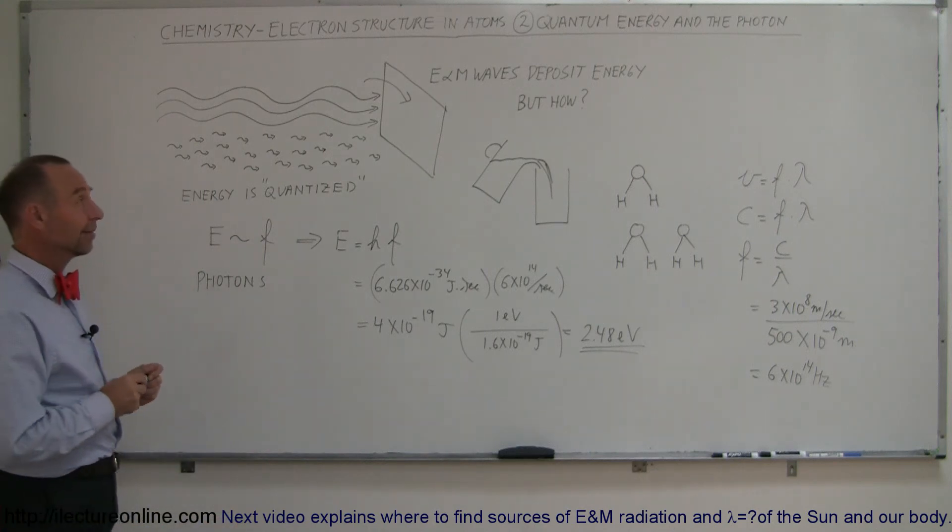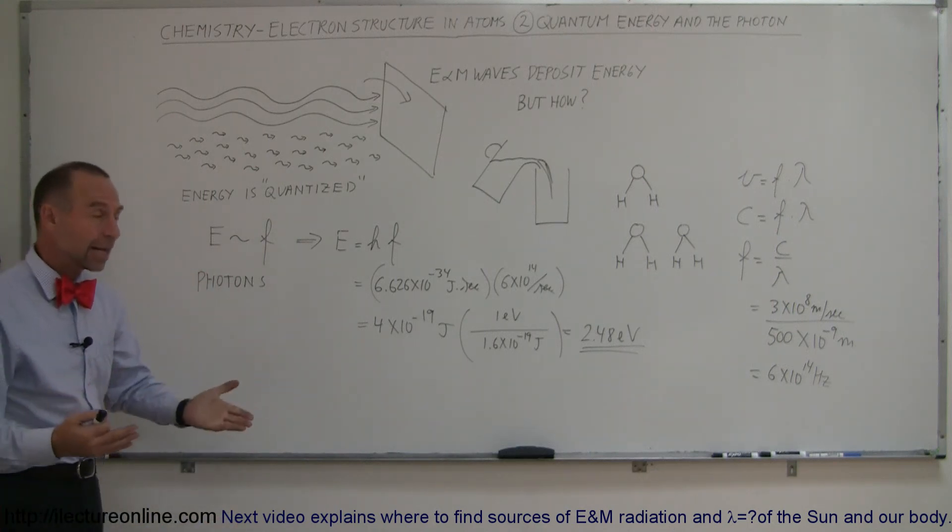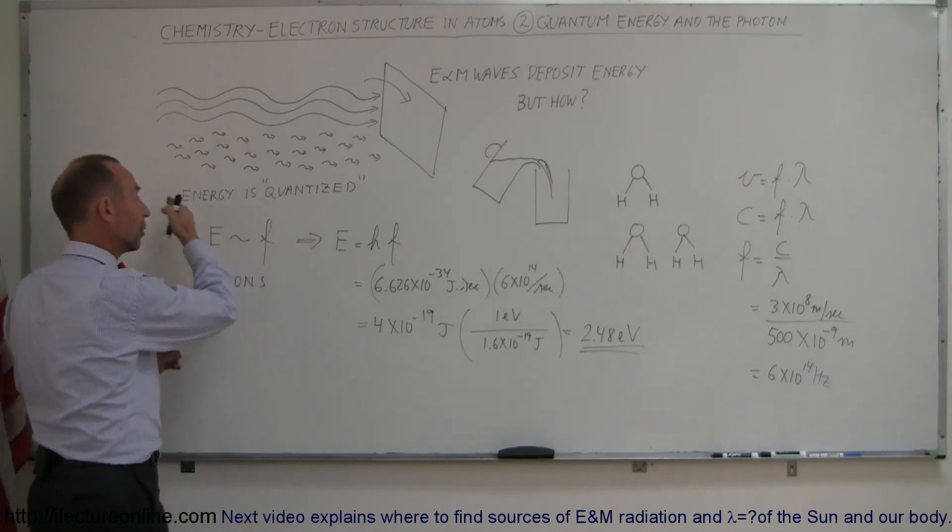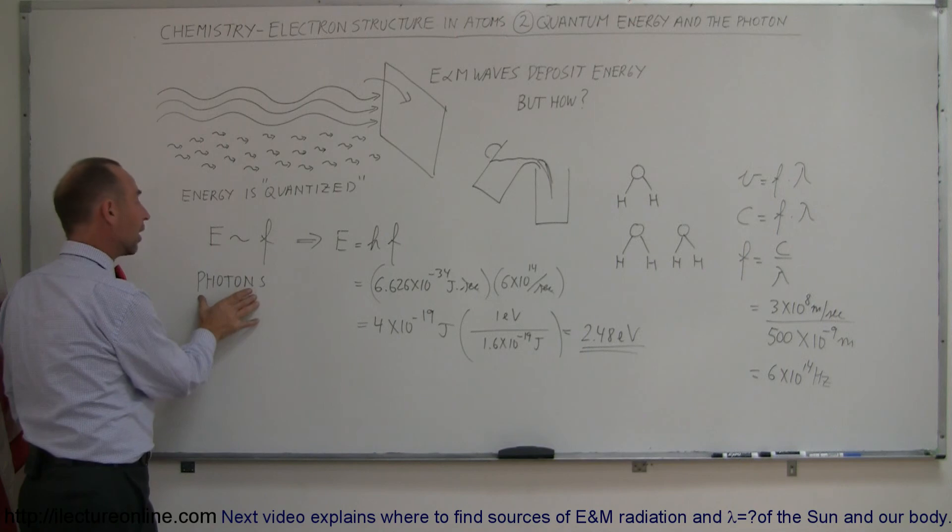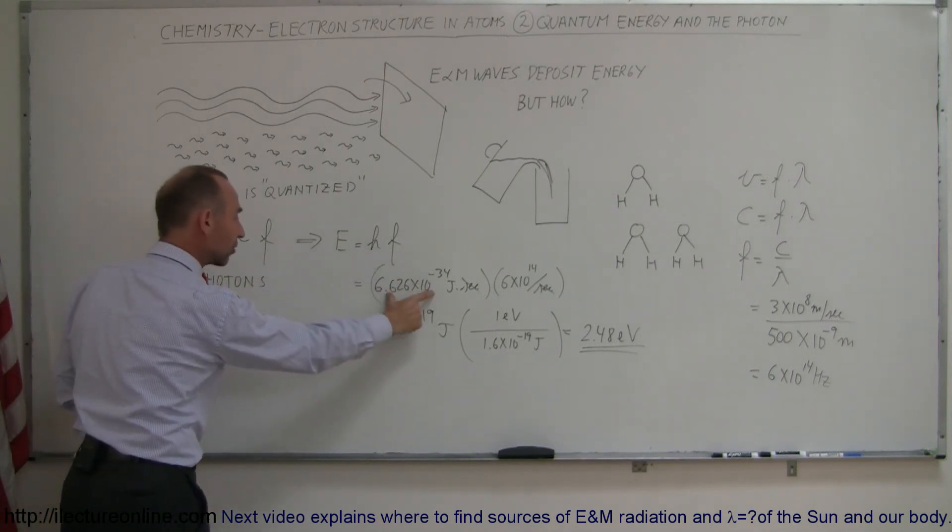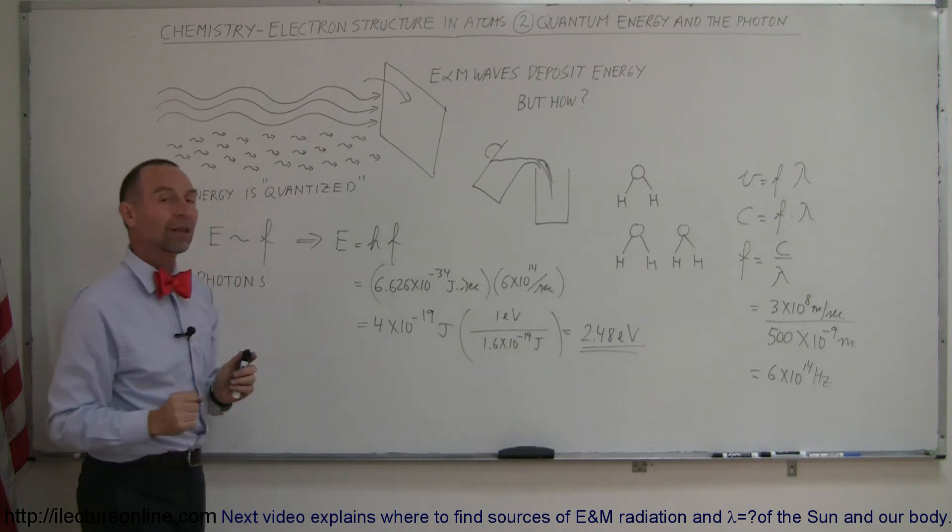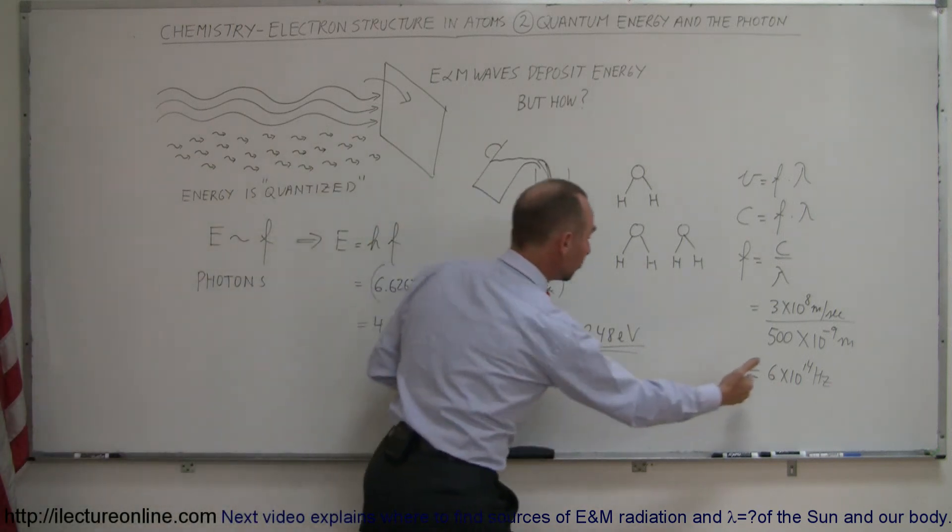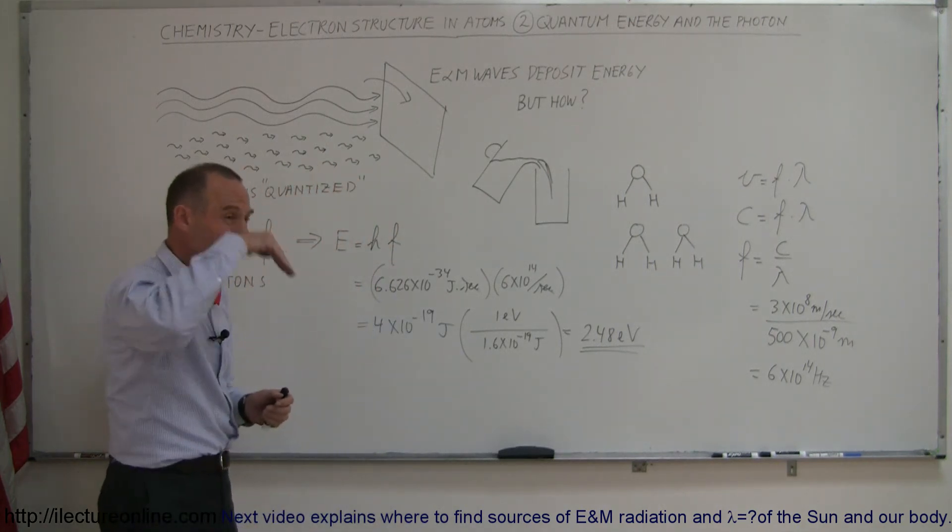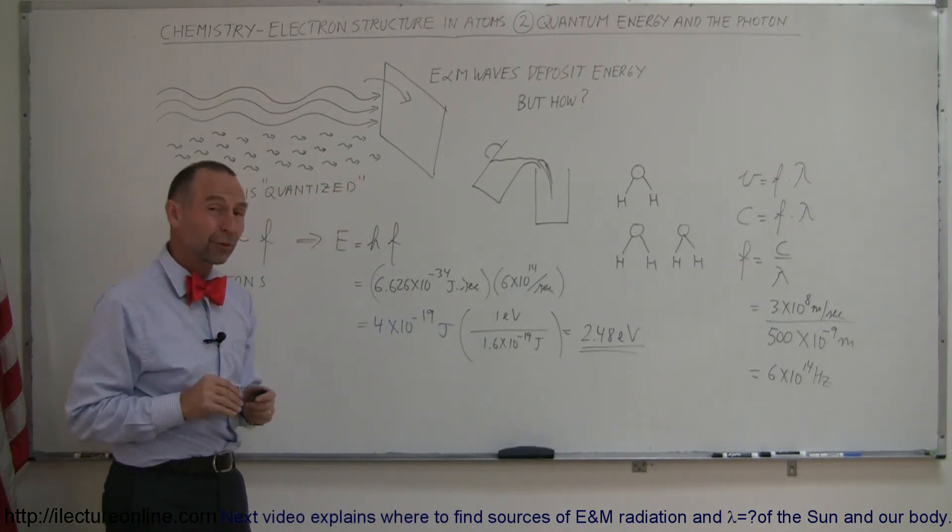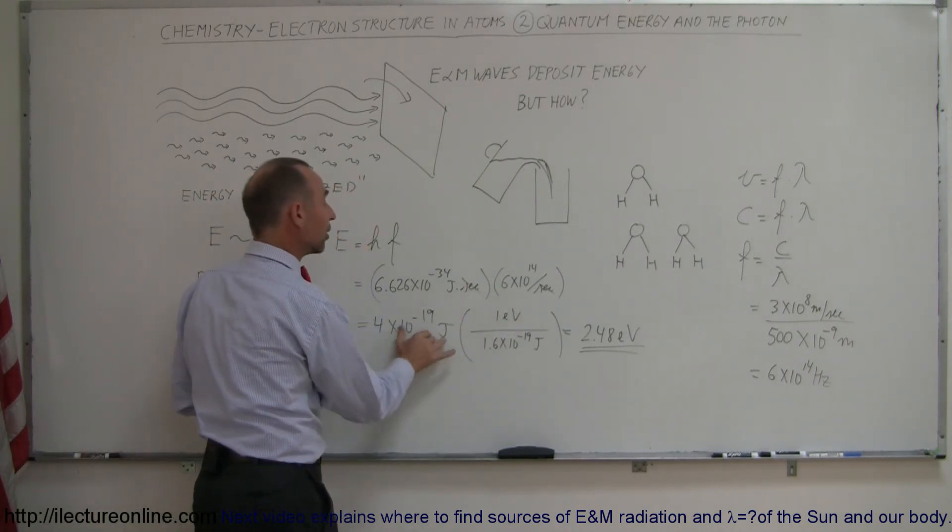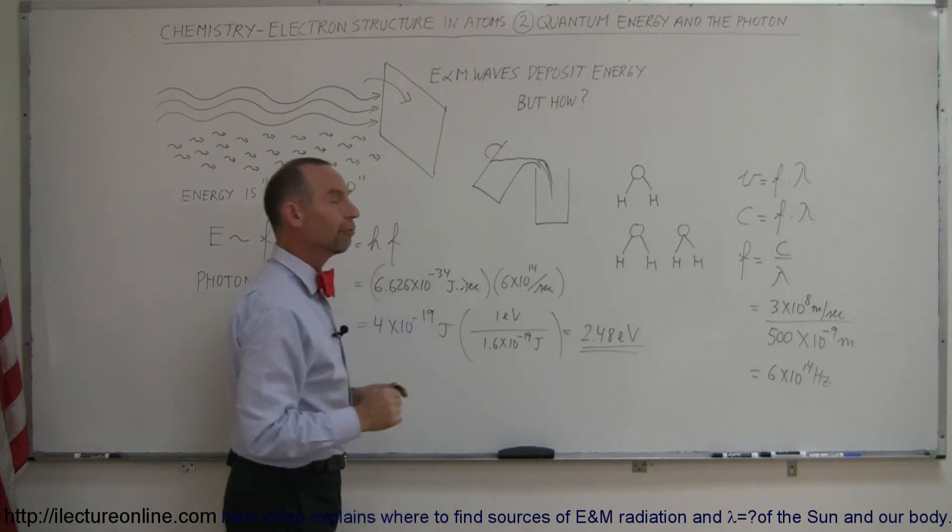Alright, so now we realize energy, electromagnetic radiation, is divided into small little chunks called quanta, so therefore we know energy is quantized. We now also call them photons, and the energy of a single photon is equal to some constant, known as Planck's constant, times the frequency of that photon. For visible light, the frequency is around 6 times 10 to the 14 hertz. That means the waves go up and down, 6 times 10 to the 14 times per second. You multiply that times Planck's constant, you have the energy of a single photon, and we can convert that to electron volts.